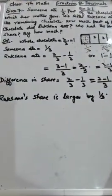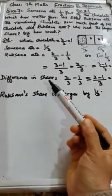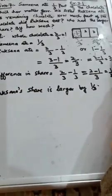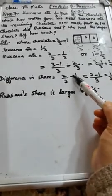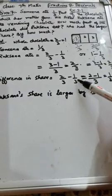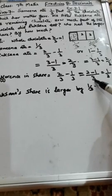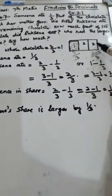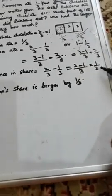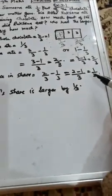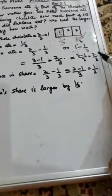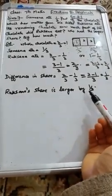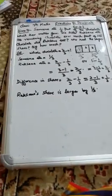Rukhsana ate 2 upon 3 of the chocolate. Now the difference: Rukhsana had the larger share. To find the difference, we do 2 upon 3 minus Samina's share of 1 upon 3. That equals 2 minus 1 upon 3, which is 1 upon 3. So Rukhsana's share is larger by 1 upon 3.